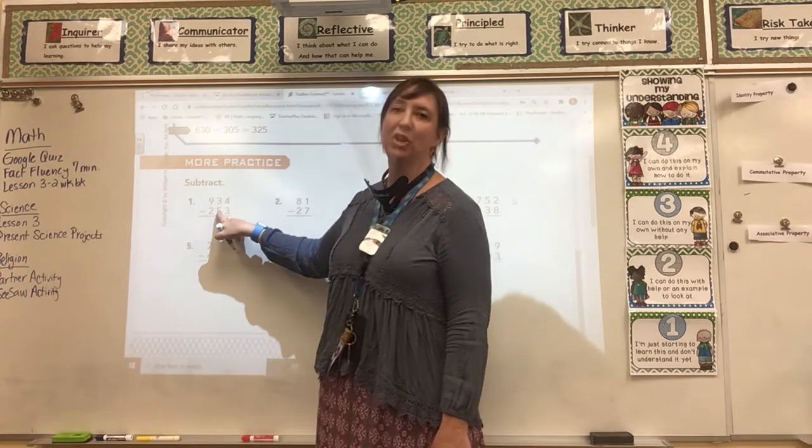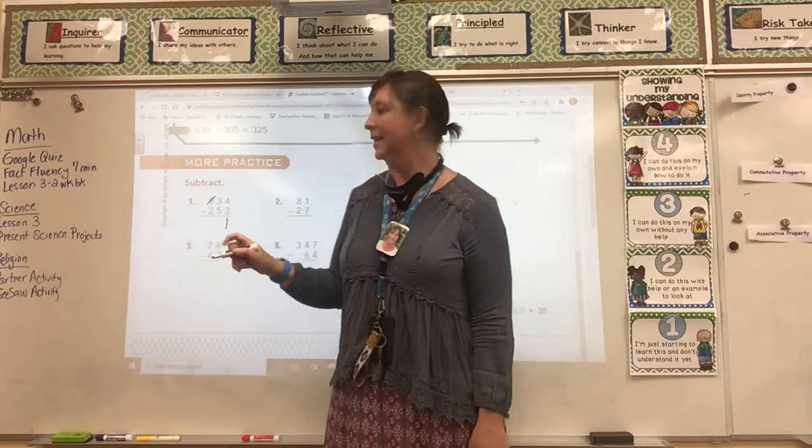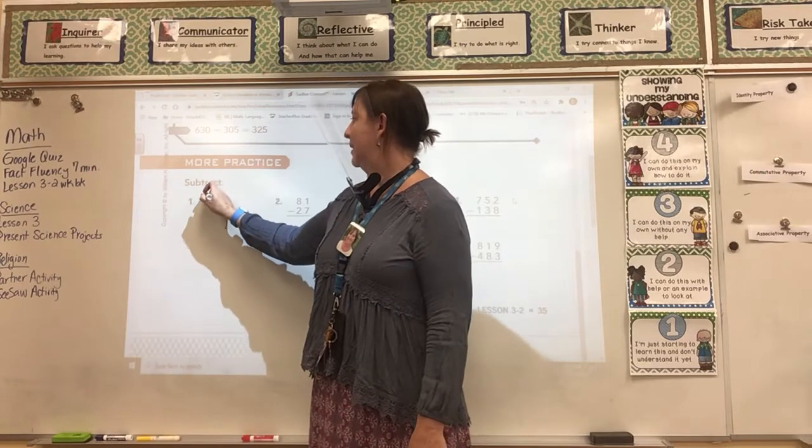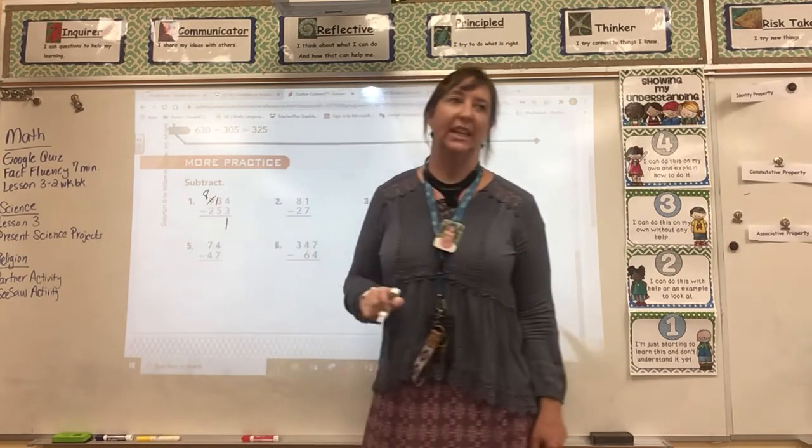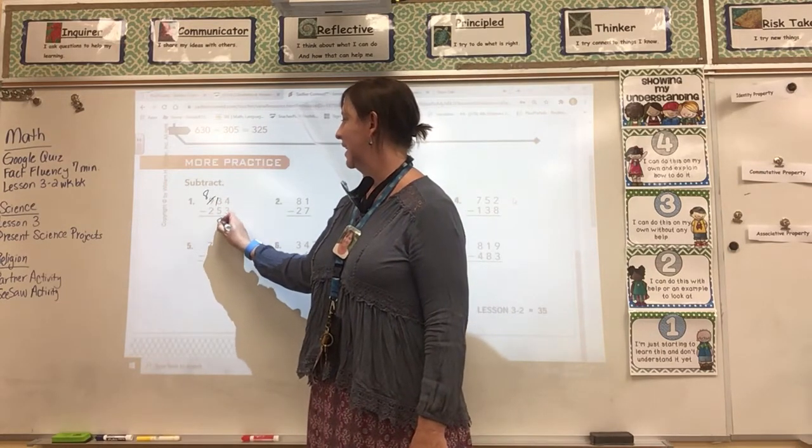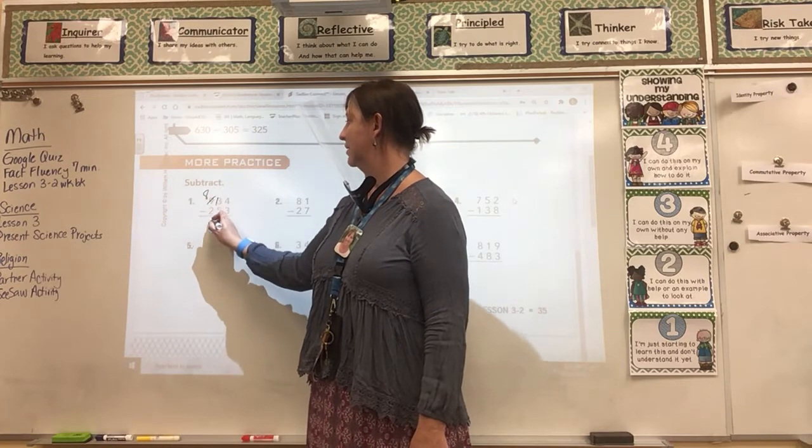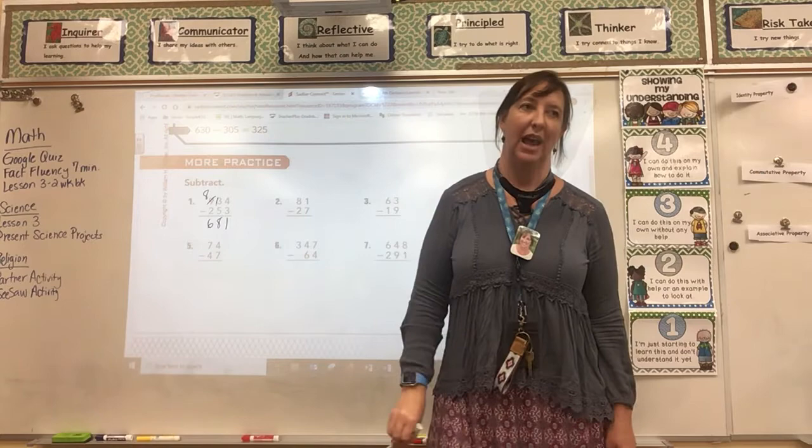I can't subtract 5 from 3, so I have to regroup and borrow from the 9. The 9 becomes an 8. This becomes a 13. 13 minus 5 is 8. And 8 minus 2 is 6. And so your answer is 681.